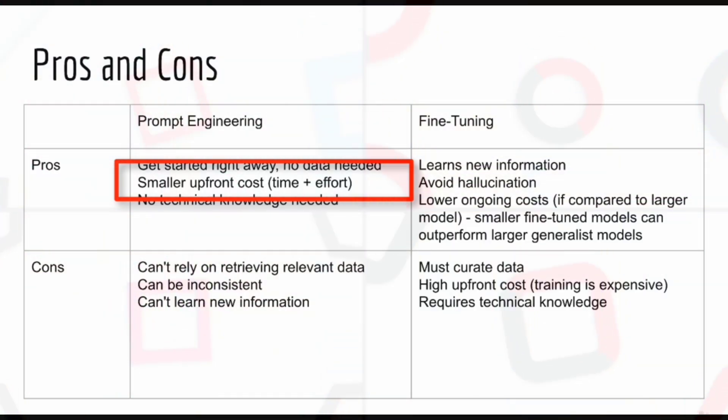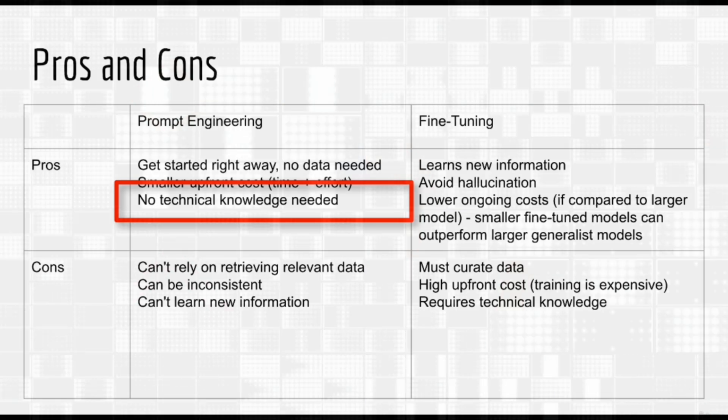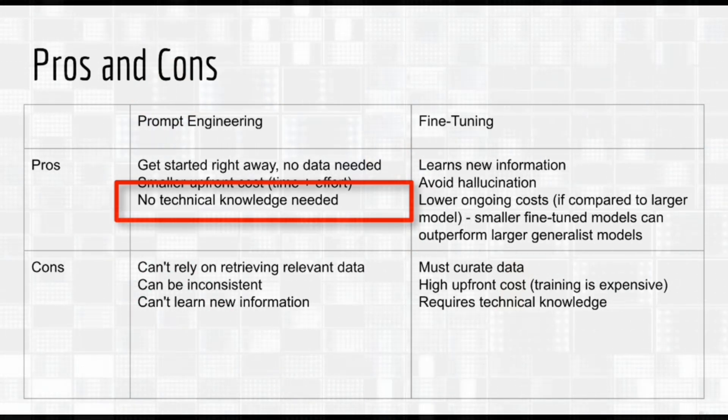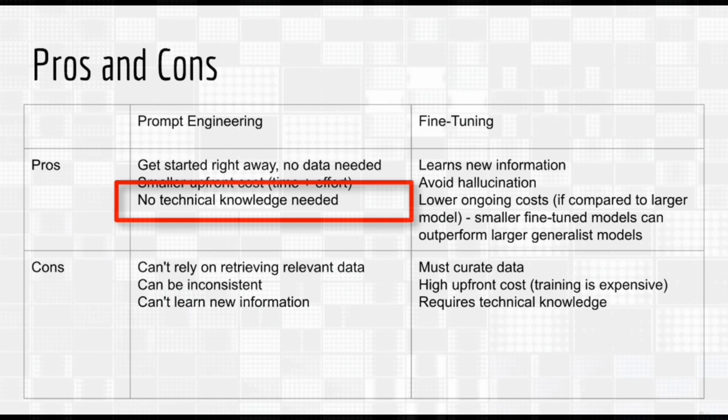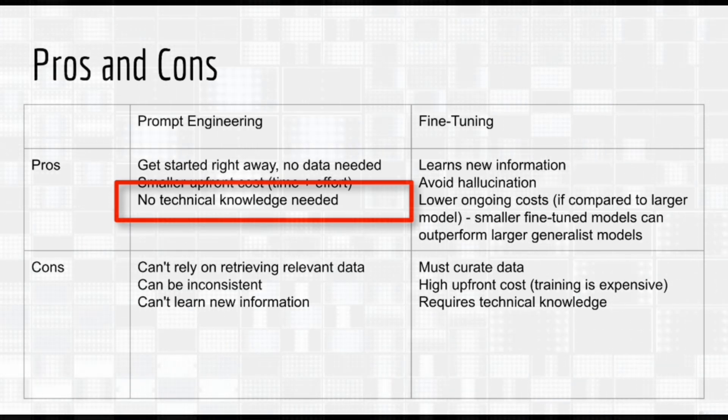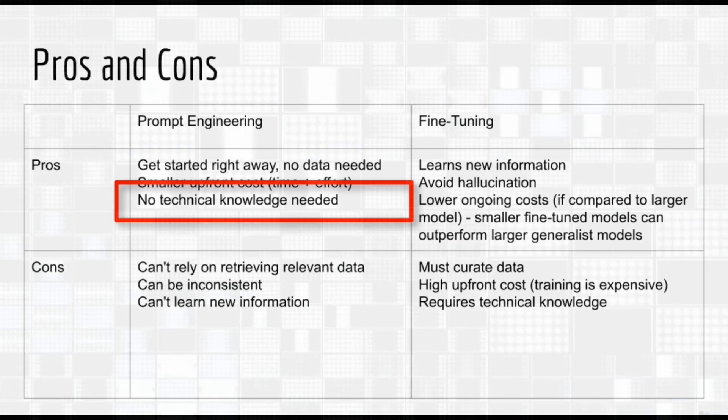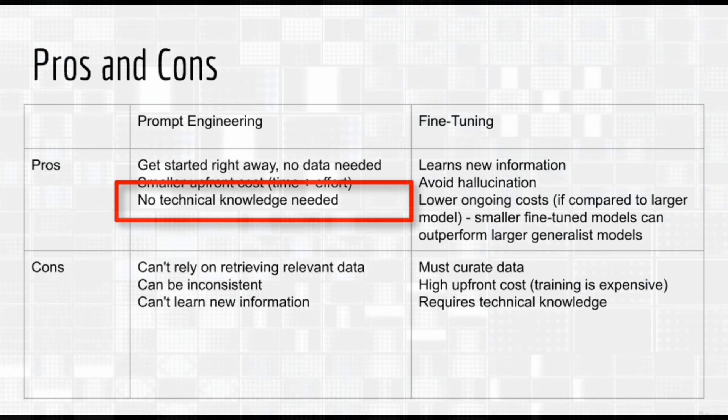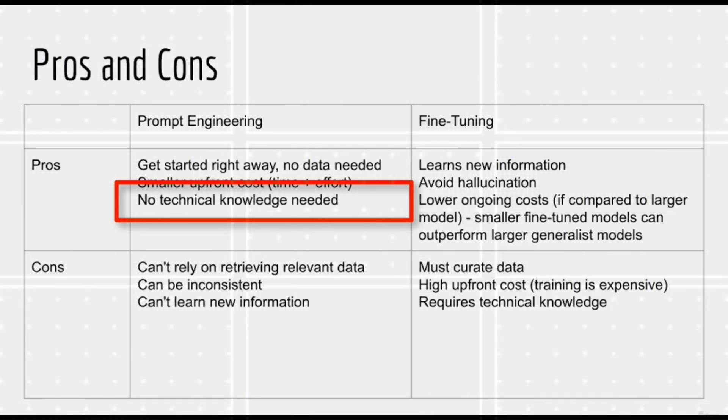Another benefit is there is a smaller upfront cost. By cost, I'm not only talking about explicitly spending money, but also time and effort, compiling a dataset, and then paying for the training process. And after that, still more time and effort needs to be spent on evaluating whether or not training was successful. Another benefit of prompt engineering is that no technical knowledge is needed. You just ask ChatGPT what you want to ask. No need to write code to curate and clean your dataset. No need to understand how deep learning works in order to ensure training has completed successfully.